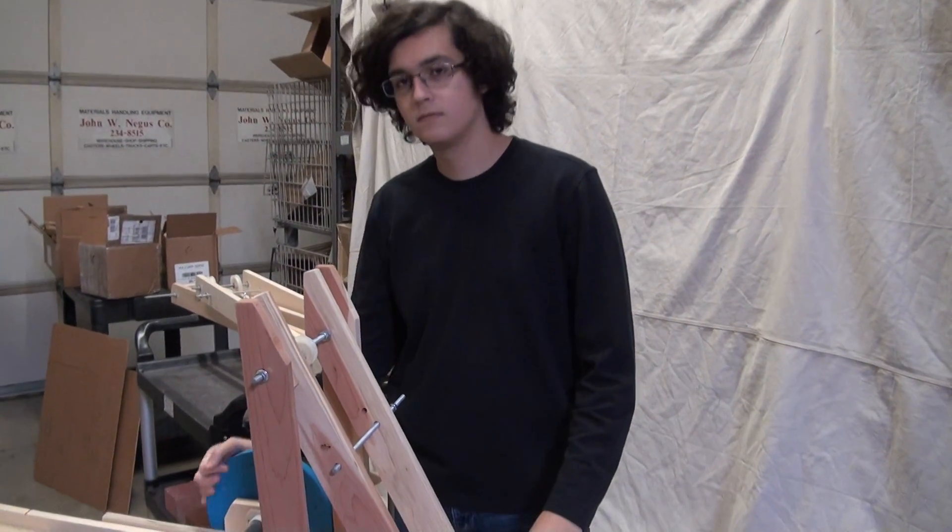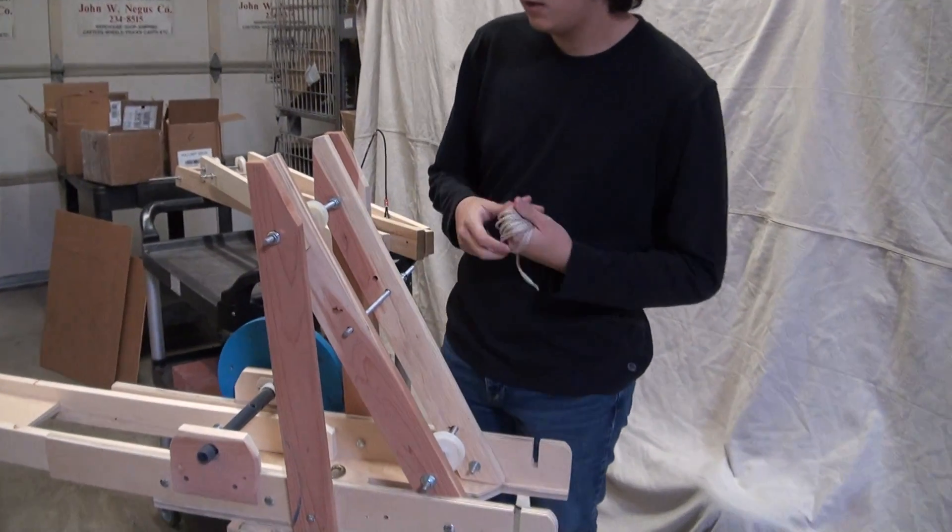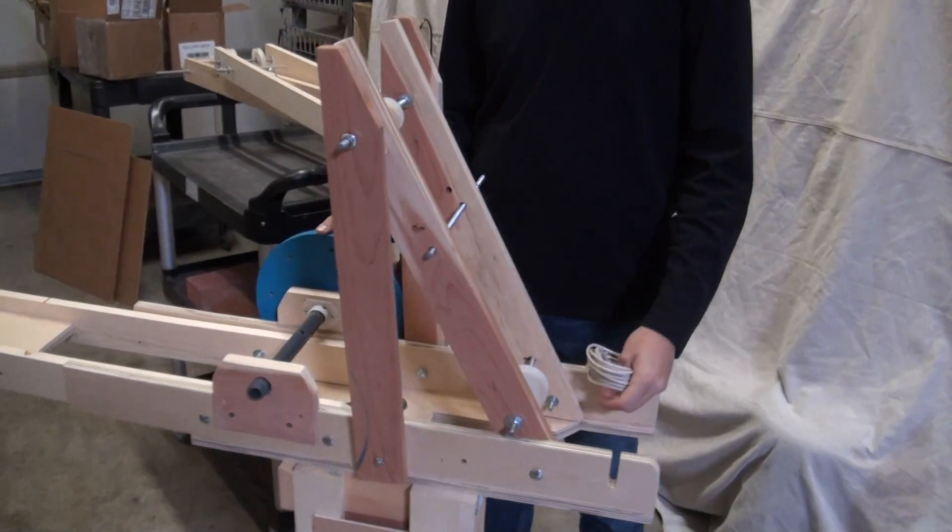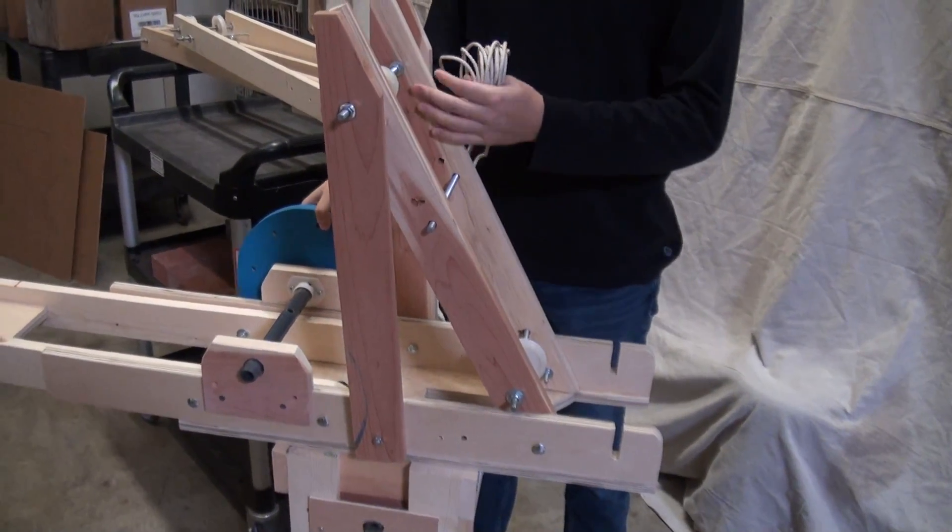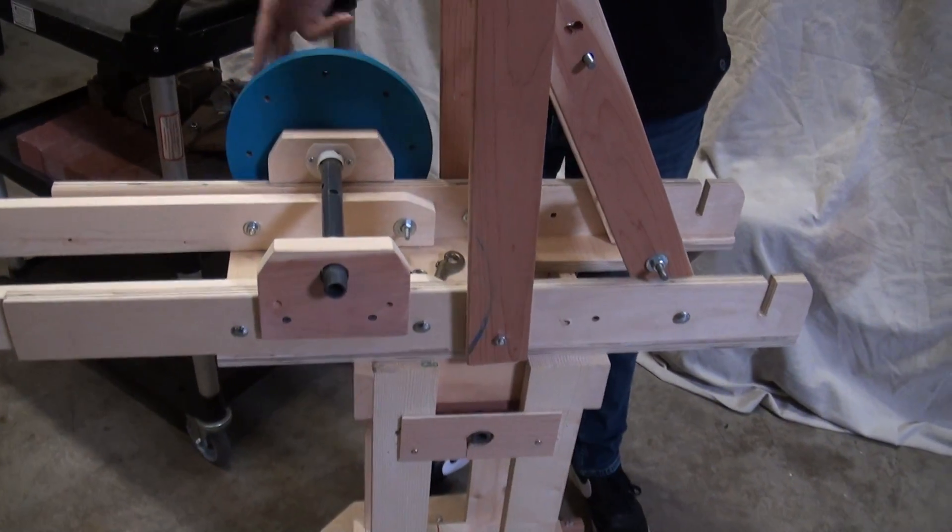So the next step is to attach the jib, but first we have to get ready the windlass that's going to hold the jib up. What we did for the windlass was we took it and we slid it in. That's it for that.